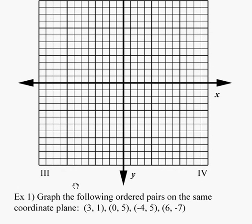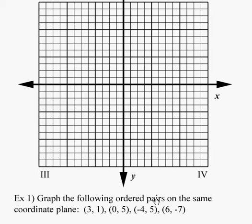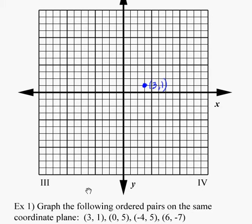Let's look at our first example, to graph a couple of ordered pairs on the same coordinate plane: points (3,1), (0,5), (-4,5), and (6,-7). If we plot them on our graph, (3,1), we start at the origin. The first value, 3, is the x-value, so we go right 3 because it's positive 3. And then we go up 1, since the second point is the y-value, and put a dot there.